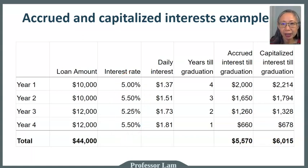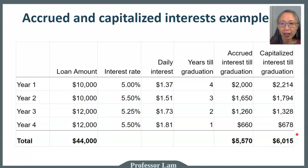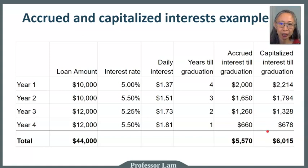That's assuming the interest rate is the same. So if you take out a private loan that capitalizes interest and has a higher interest rate, you can end up paying $1,000, $2,000, or $3,000 more in interest compared to a federal loan.